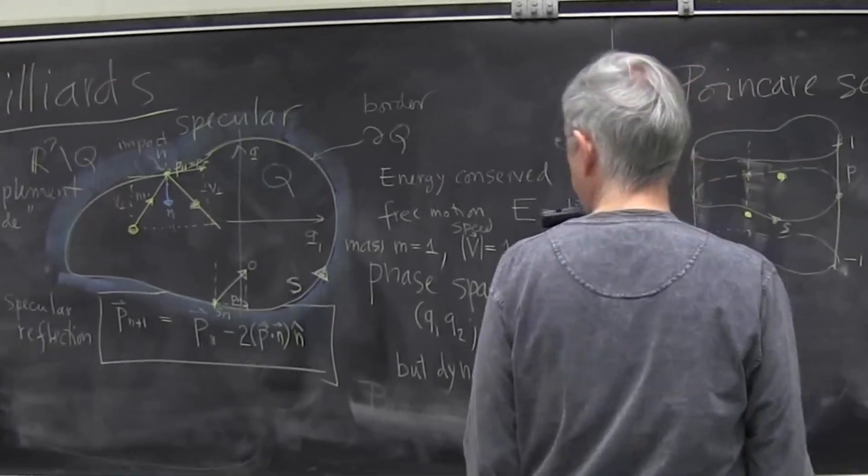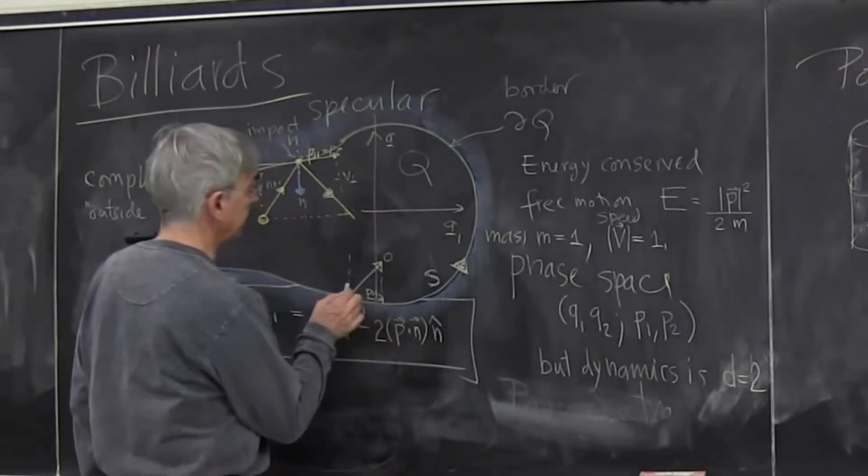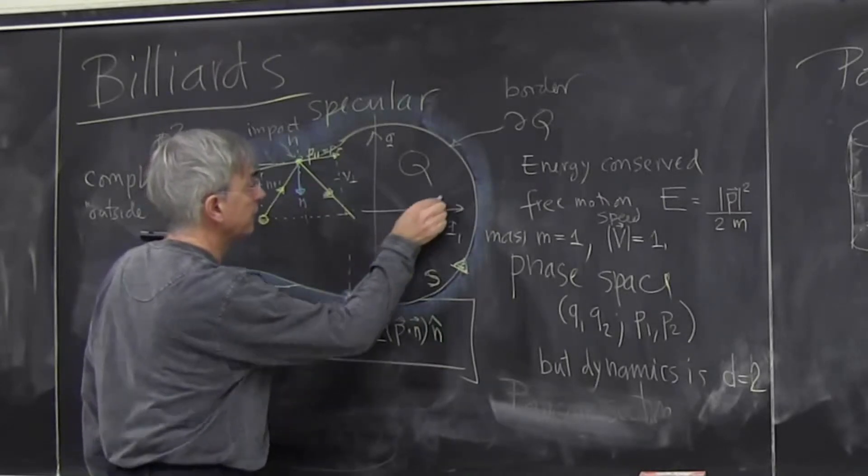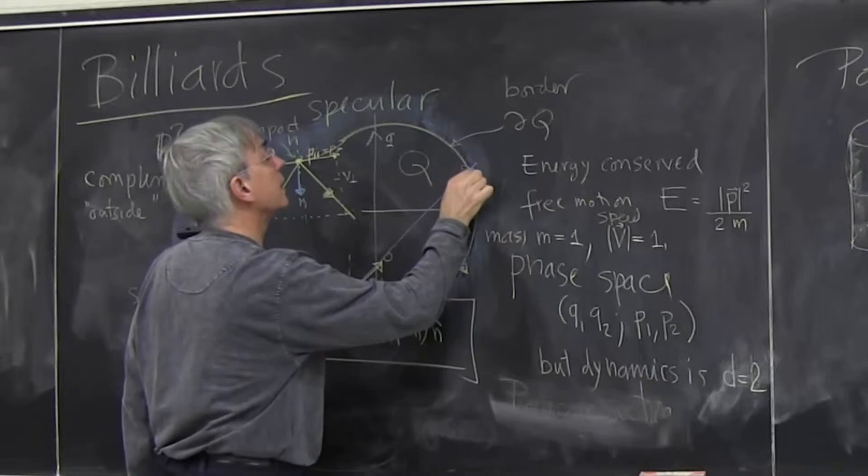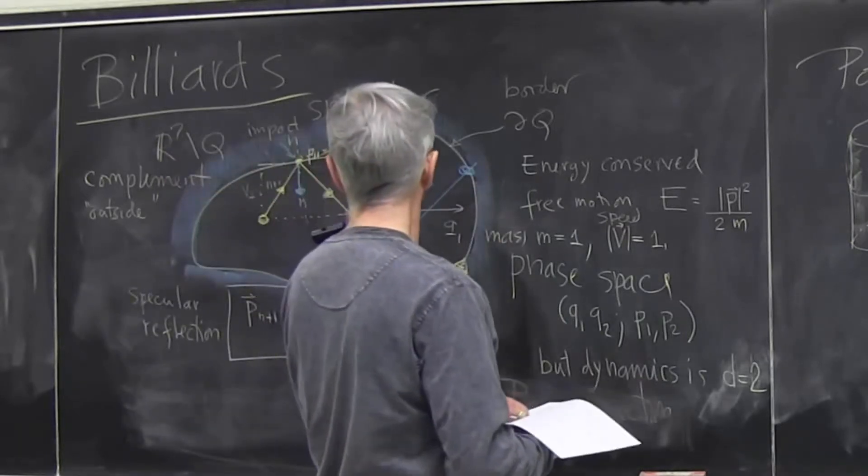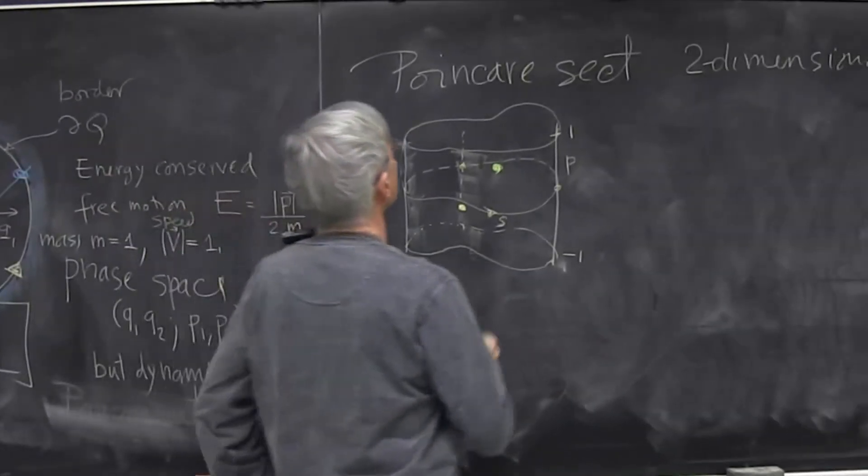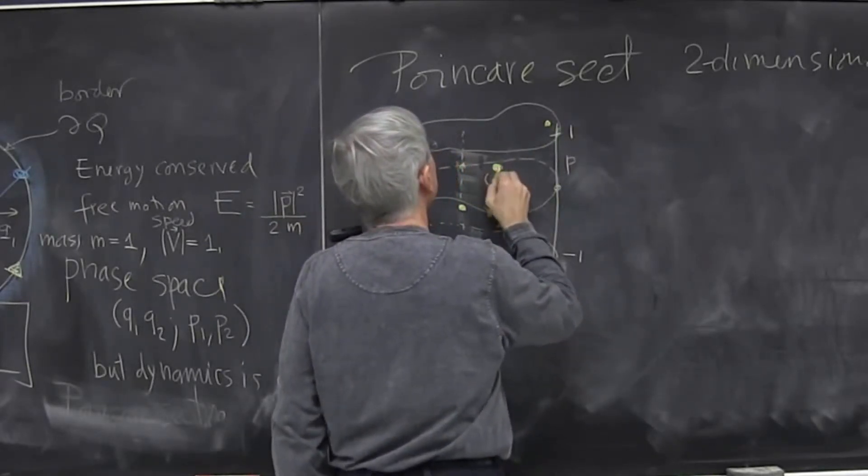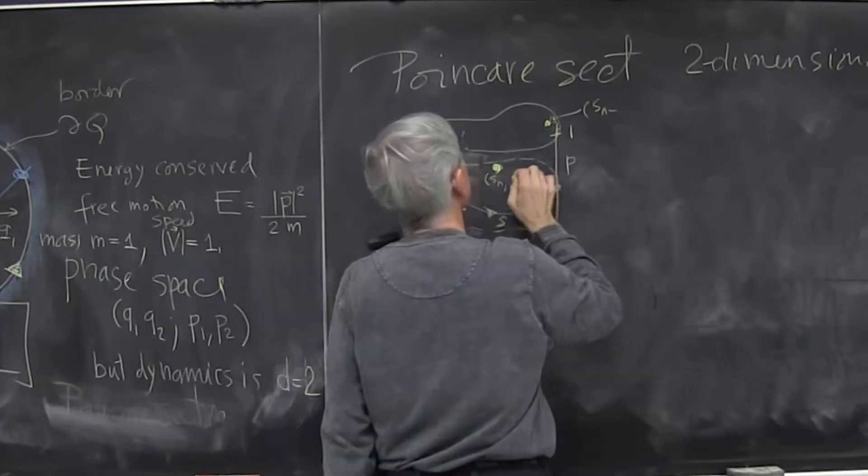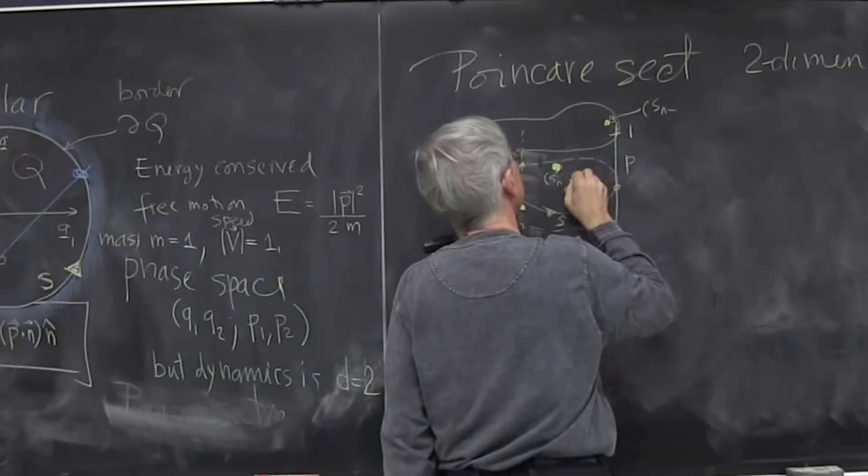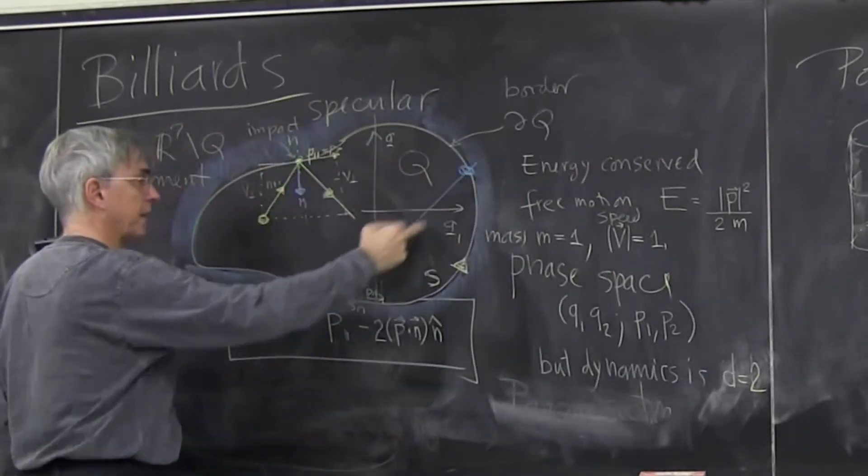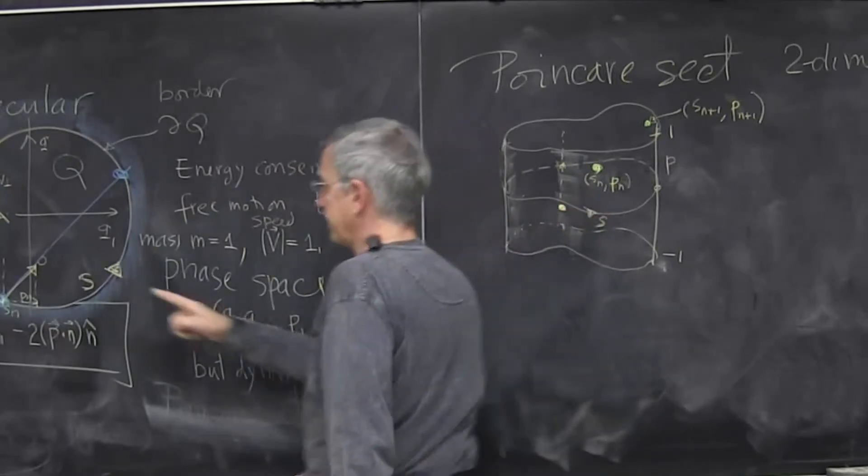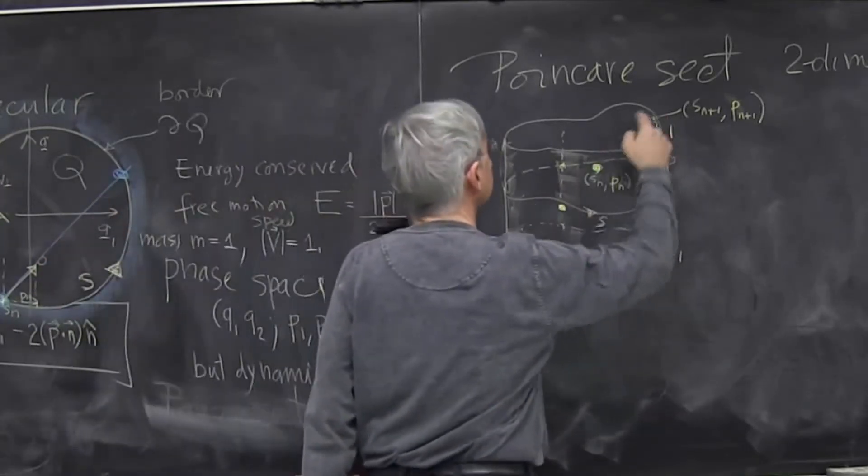So now the Poincare map dynamics looks something like that. I start here, and I just move until I hit the wall again. So that will happen. I start here, and next time. So this is my S, and why did you let me do this? Okay. So while I'm bouncing in this space, I also move on Poincare section, and every time I hit the wall, I record it where it is.